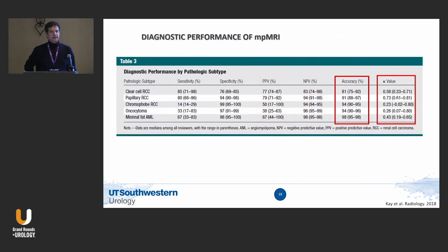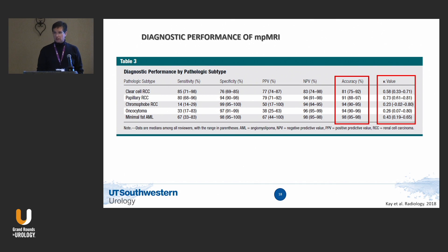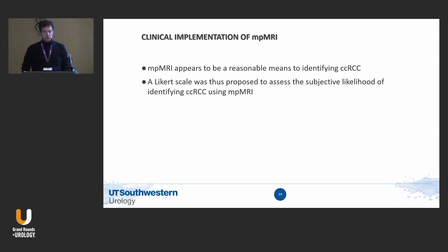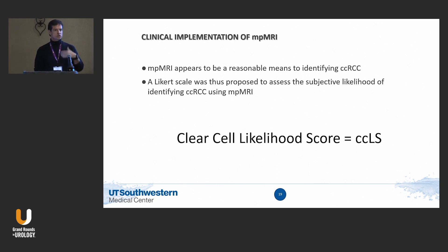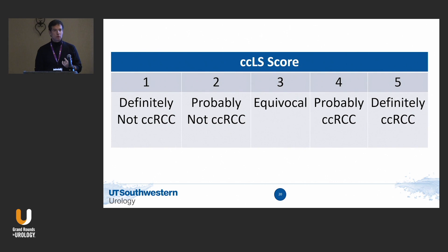We have published the accuracy and performance numbers — sensitivity, specificity, etc. — for all tumor types. The numbers are not perfect, but they are literally as good as biopsy. It appears to be a reasonable tool to identify clear cell and papillary carcinoma. For the surgeons, we developed what we call a Clear Cell Likelihood Score, or CCLS. That's all I look at when I get a report: definitely not clear cell to definitely clear cell, scored one through five.